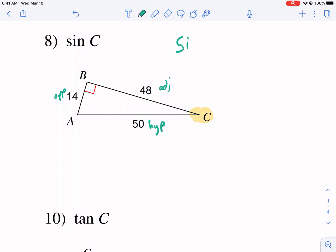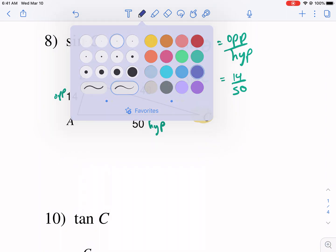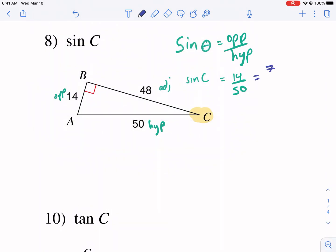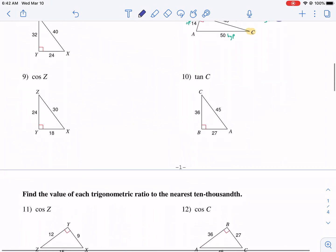So cosine of C, sorry, sine of theta is equal to opposite over hypotenuse. S-O-H opposite over hypotenuse. So then we have, it's equal to sine of C is equal to opposite 14 over hypotenuse 50. 14 up. I got to reduce that thing divided by two. I think that's the biggest I can divide by, and I get seven over 25. That's my final answer.